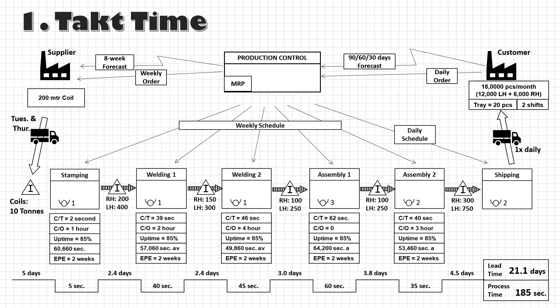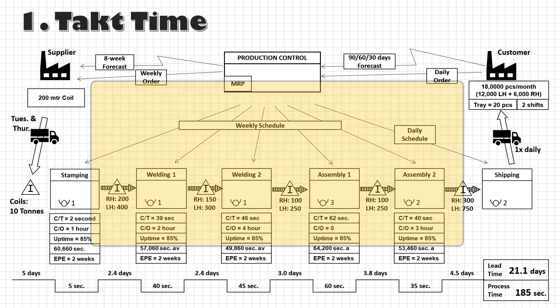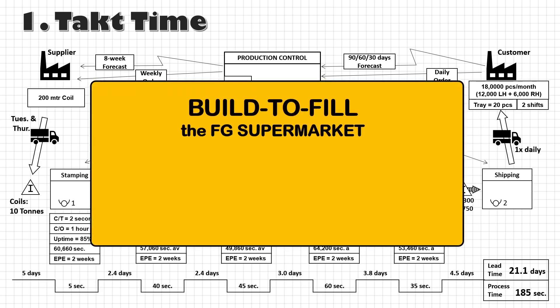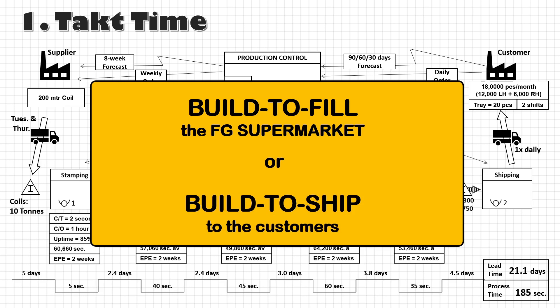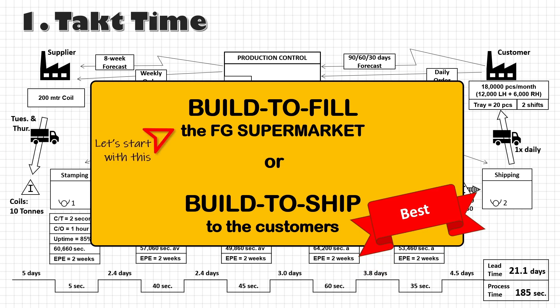Before we move on to the next step, we have to decide whether we want to build a supermarket at FG Stores and plan our manufacturing line to build to fill the supermarket, or we want to have a customer schedule at the manufacturing line and build directly to ship with no FG stock inventory. Though the second option is the ideal condition, I suggest we start with option one and work to achieve build to ship as we advance in our lean journey.